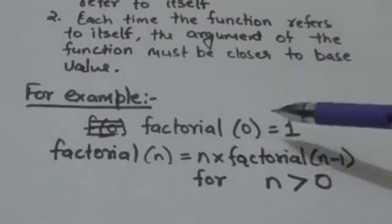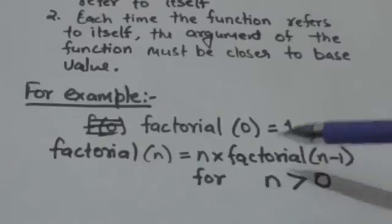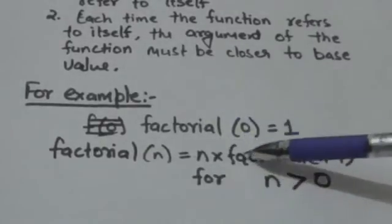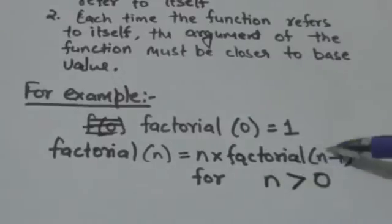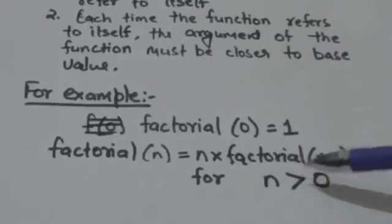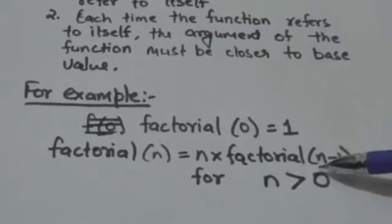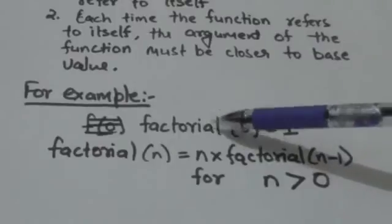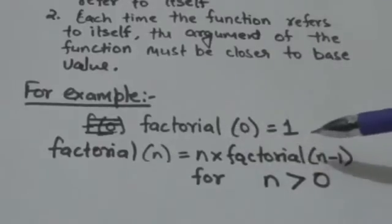See this definition of factorial function: factorial(n) equals n into factorial(n minus 1), where value of n is greater than 0, and factorial(0) equals 1.